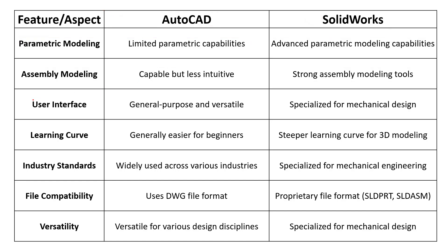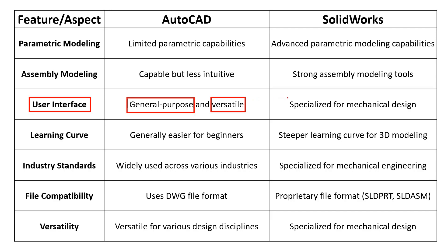User Interface: AutoCAD has a more general-purpose interface suitable for various design disciplines, including architecture and civil engineering. It may require additional plugins for specific mechanical design tasks. SOLIDWORKS is tailored specifically for mechanical design. Its user interface is designed to streamline the creation of 3D models and assemblies, making it more specialized and efficient for mechanical engineers.